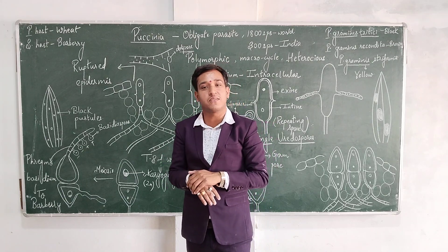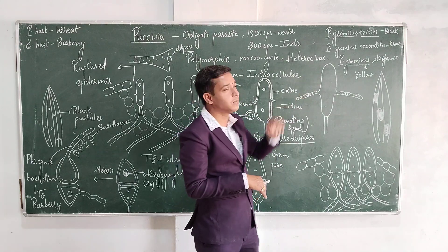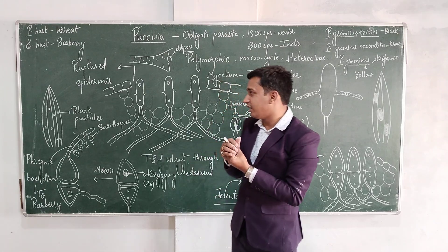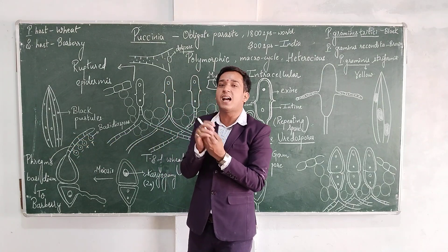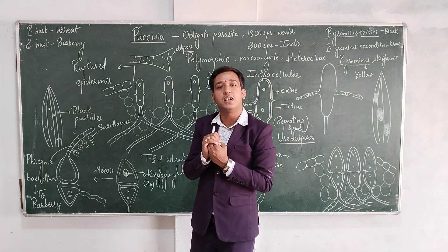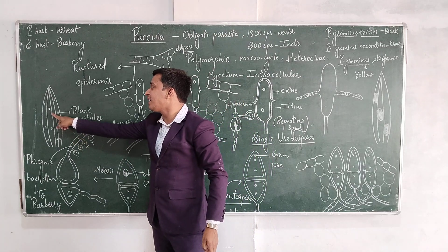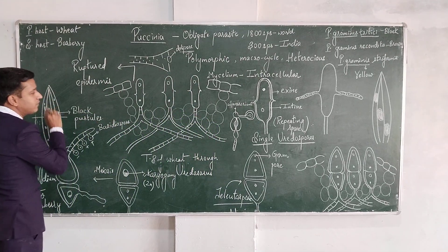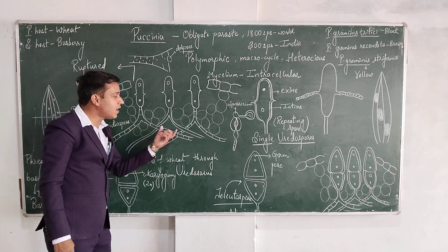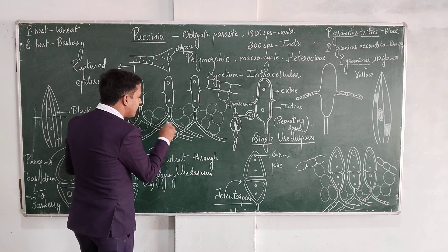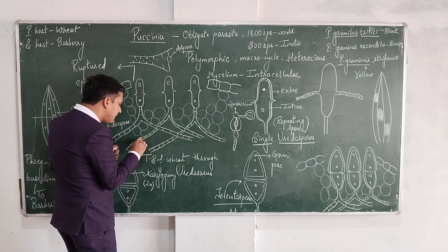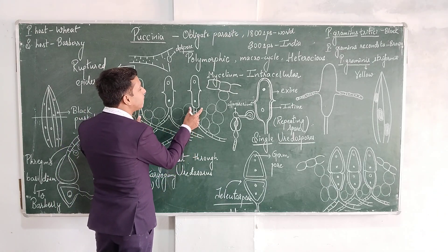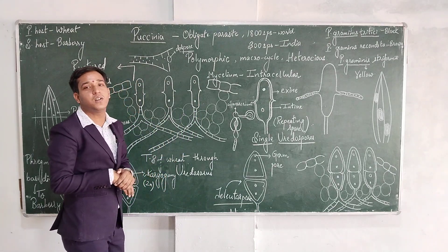We will discuss Puccinia graminis tritici, that is black rust. In the month of January, if we see in a wheat crop, some yellow-black rusts are found on the leaf surface of the wheat. These black rusts appear as black pustules. If we cut a transverse section, we can see the mycelia of the fungus, which is septate and has been inserted into the host cells — it is intracellular. When the mycelia gets infected it forms spores known as uredospores.